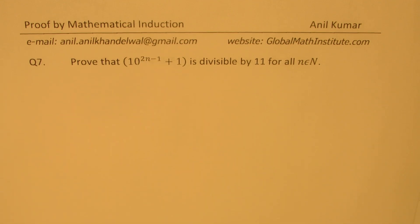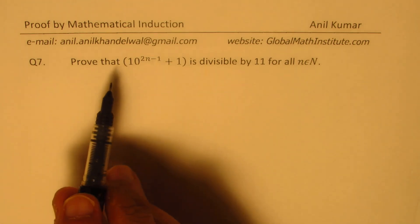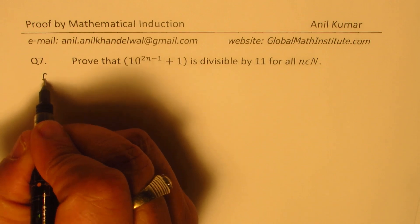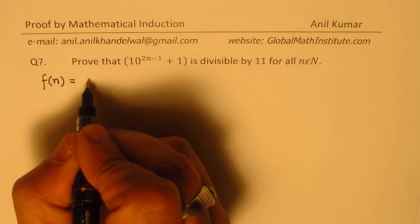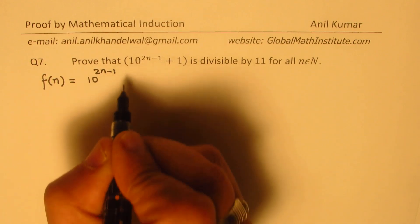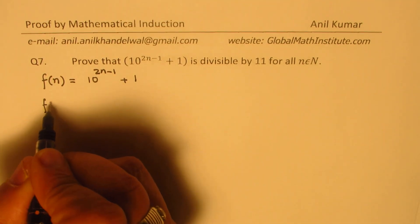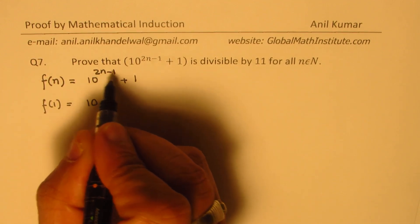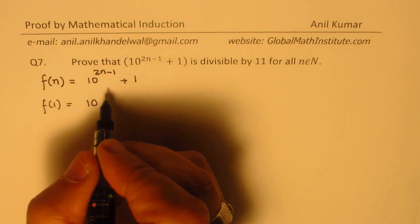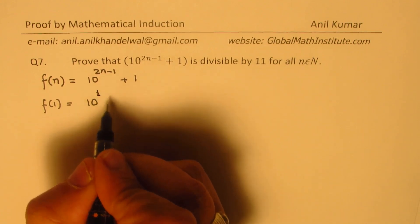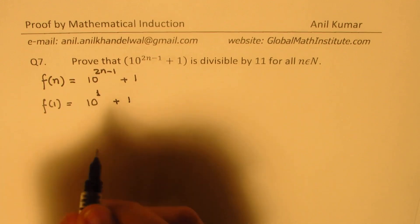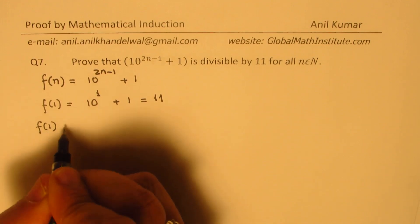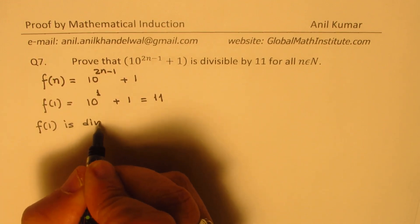In the method of induction, we have to first show that for n equals 1, this is true. So we'll define our function f(n) as equal to 10 to the power of 2n minus 1 plus 1, and we'll test what f(1) equals. f(1) is 10 to the power of 2 minus 1, which is 10, plus 1, and that is indeed 11. So we know that f(1) is divisible by 11.